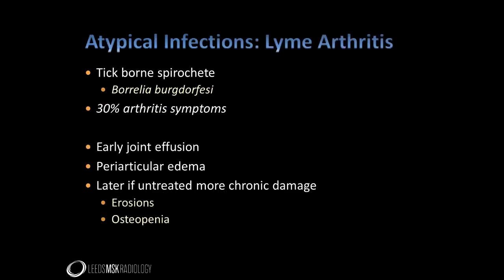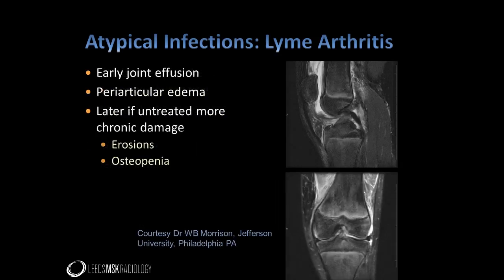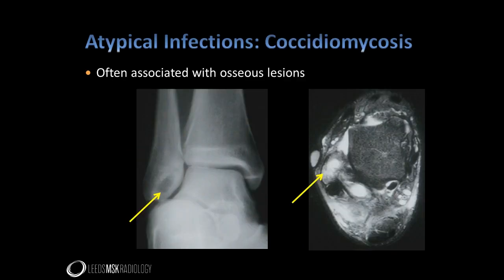Another atypical organism causing joint infection worth mentioning is the Borrelia spirochete carried by ticks and causing Lyme disease. This is commonly seen in the northeast United States and in northern Europe where its incidence is on the rise. Nearly a third of patients presenting with Lyme disease will experience joint symptoms. Early in the disease patients present with a non-specific joint effusion, with typical periarticular oedema. If untreated the condition leads to chronic joint damage. Fungal organisms can also cause infective arthritis, such as coccidiomycosis, where osseous lesions are common with relatively good preservation of the joint space.